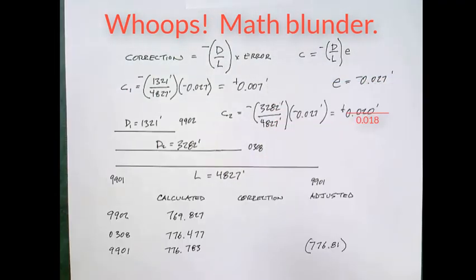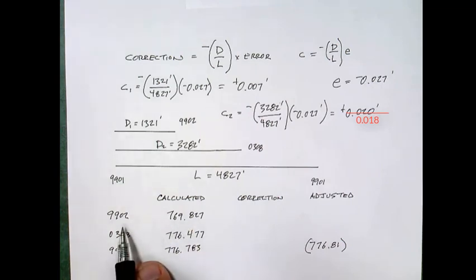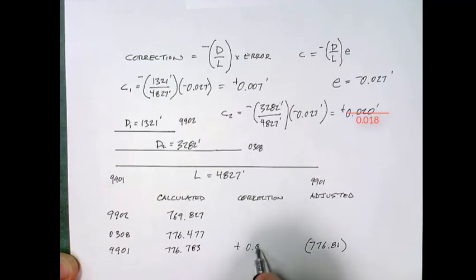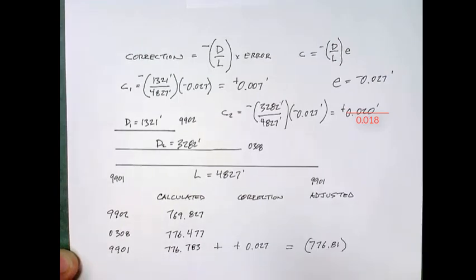So now to apply our corrections we're going to simply summarize these. These are the calculated elevations based on our measurements for points 9902, 0308 and our closing benchmark 9901. Now remember we started at 9901 and its published elevation was this 776.81. Our calculated elevation at the end based on our measurements is 776.783. Our closure error as we said before was negative 0.027. Well the correction is going to be a positive 0.027. So when we apply the calculated elevation plus the correction, the published elevation is now our adjusted elevation at the end of the circuit.